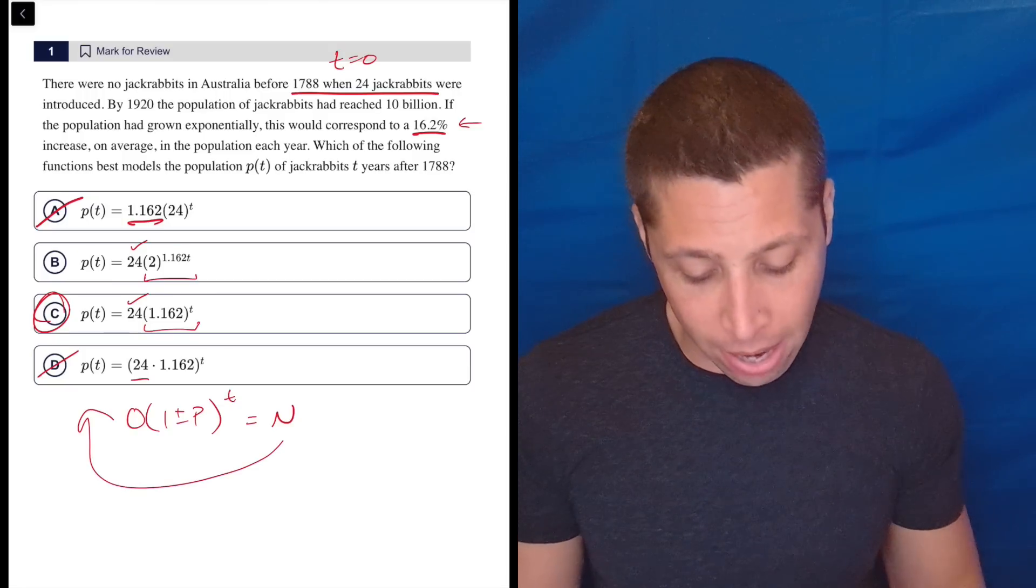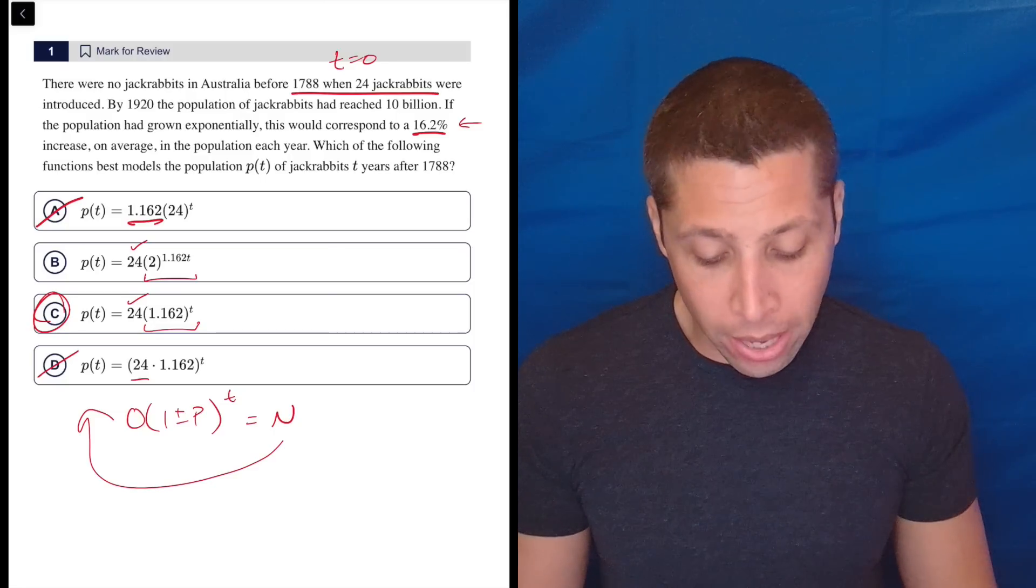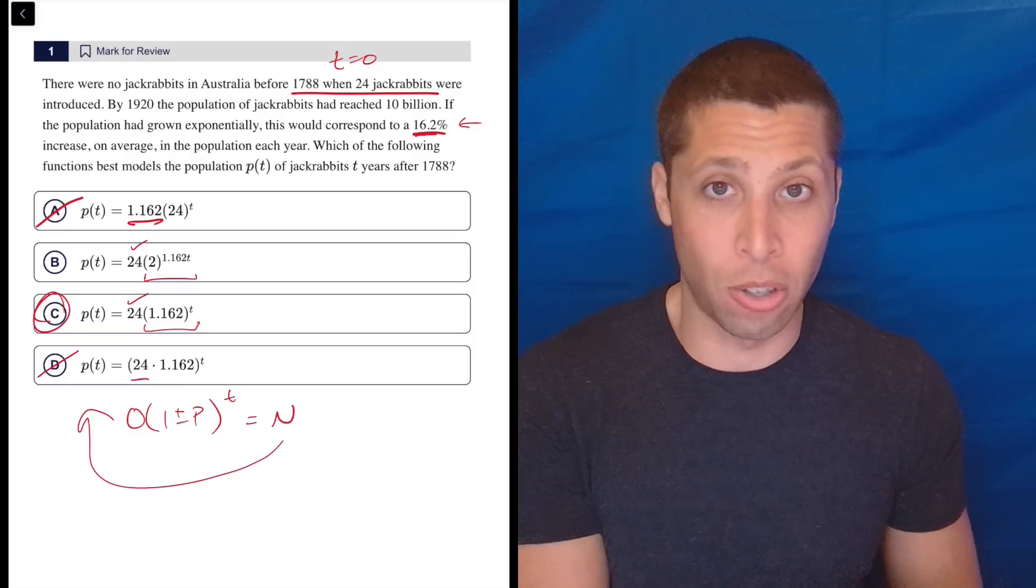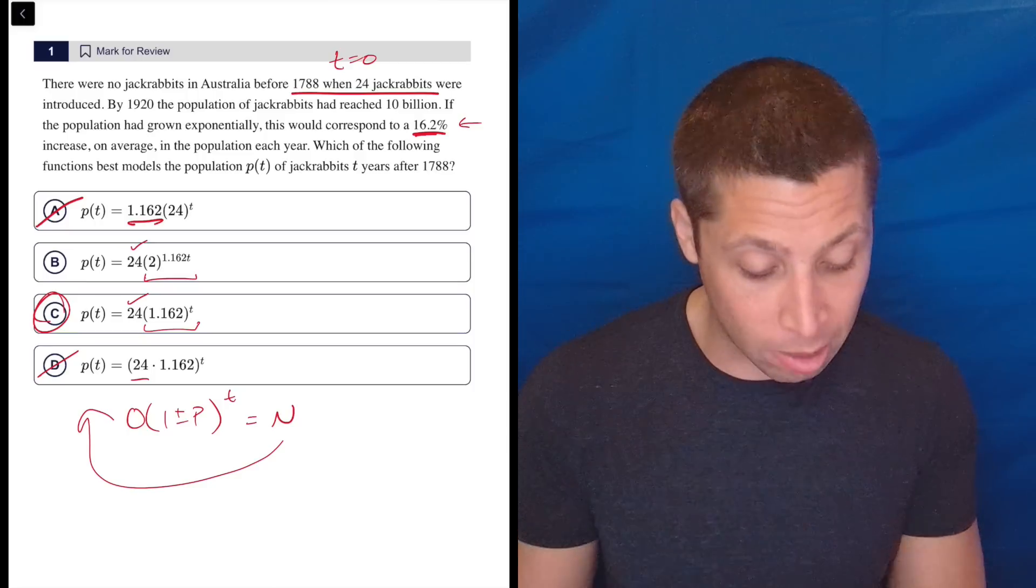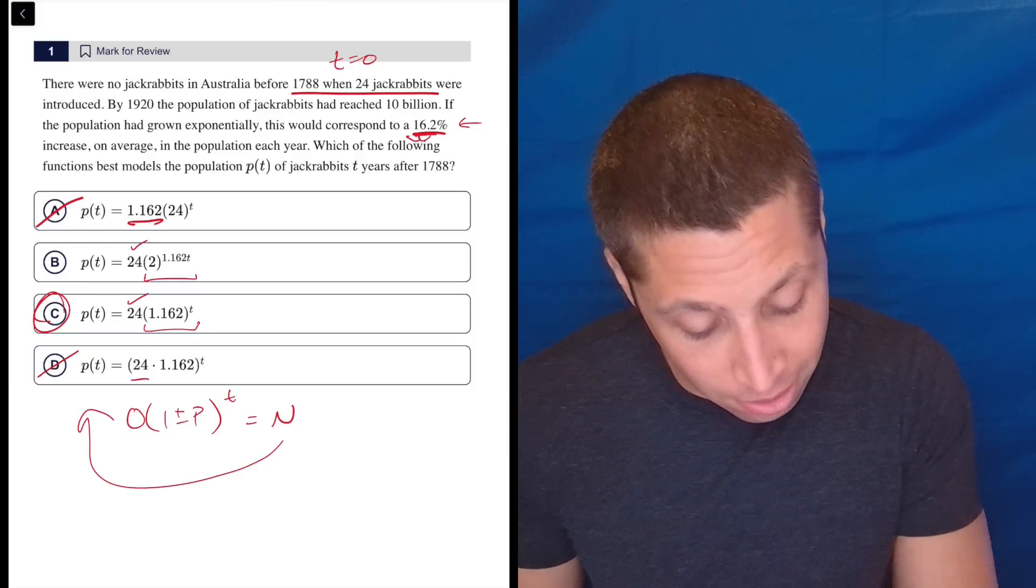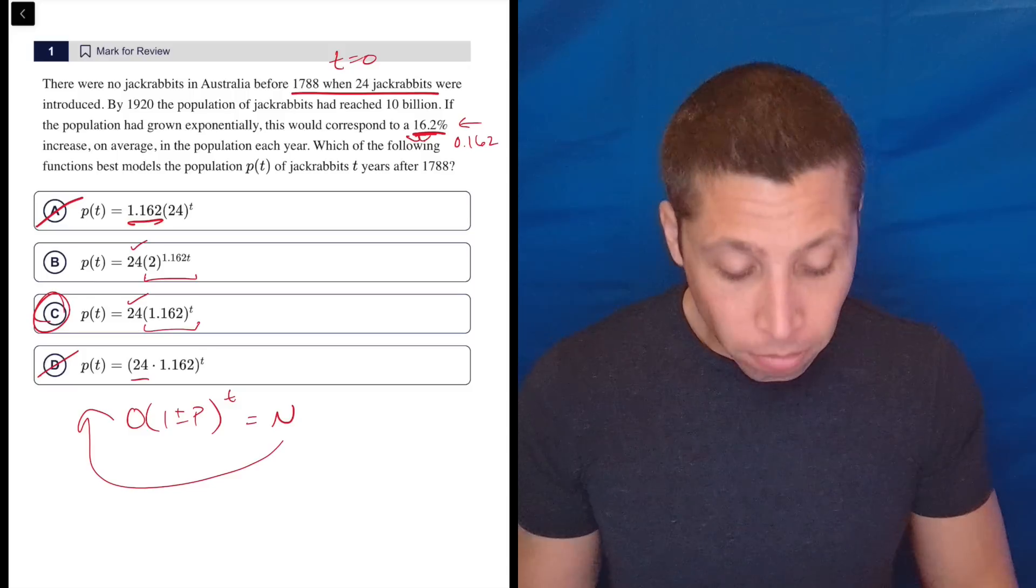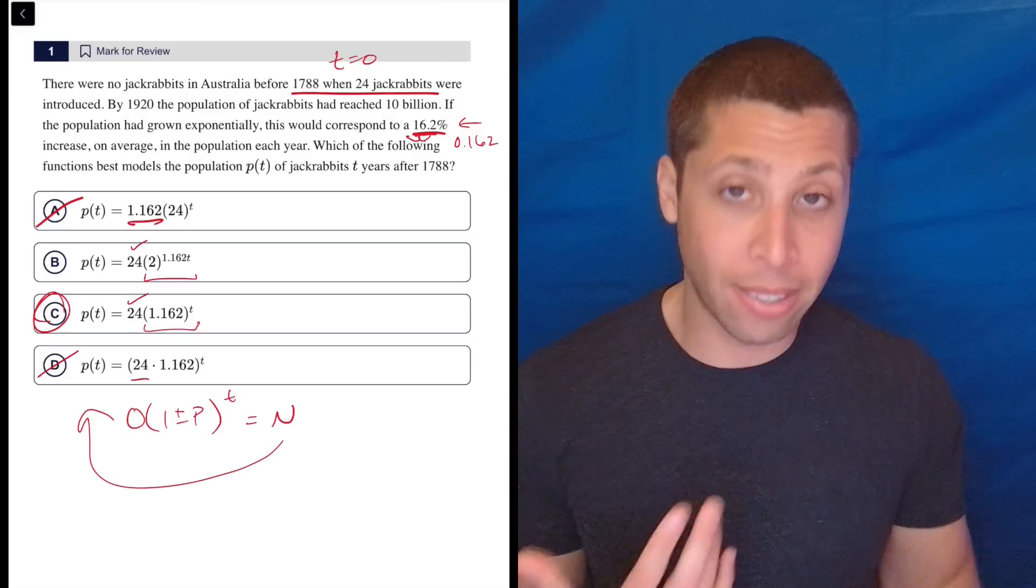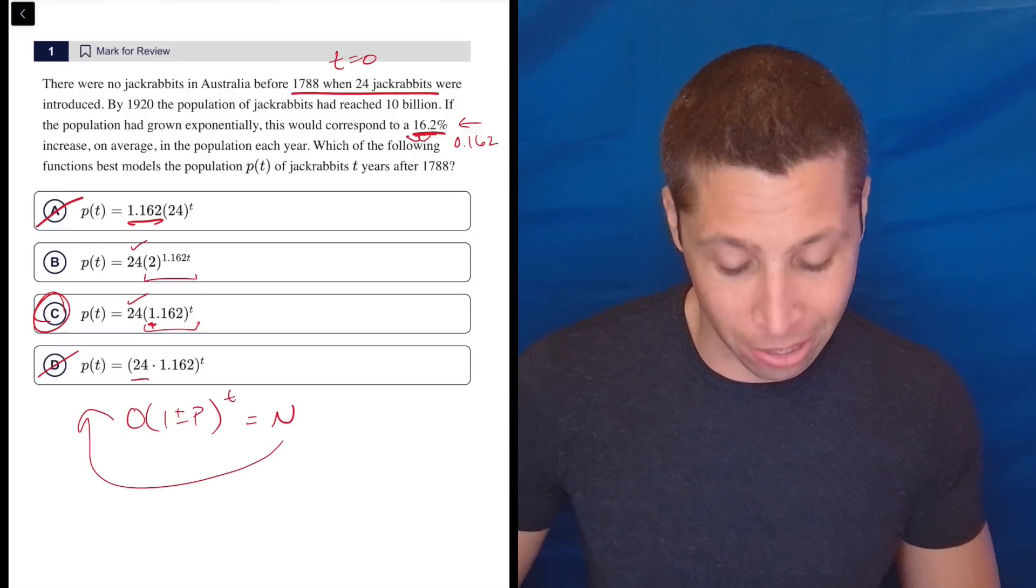So the N is that part there. And then the O, that's our original, our y-intercept. And that's why it's a 1.162 and not just 0.162. That percentage gets converted to a decimal by moving the decimal point two spots. So that's 0.162 as a decimal, but it's an increase. And so we have a one plus that, and that's why that one right there gets shown up into the equation.